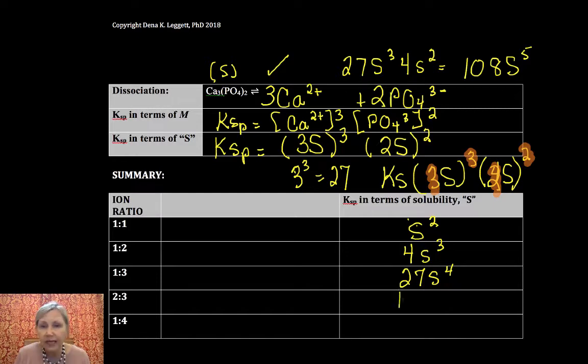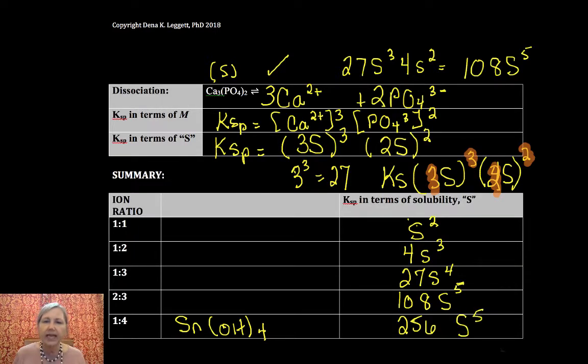I'll tell you I haven't memorized this. I think it's kind of valuable, so you may want to do that. If it's two-to-three or three-to-two, it's 108S to the fifth. And if it's one-to-four, I know that's a little unusual, but you might have something like tin 4 hydroxide or something like that or lead, you know, lead 4 nitrite, I don't know, I'm making stuff up. Okay, and that would be 256S to the fifth.